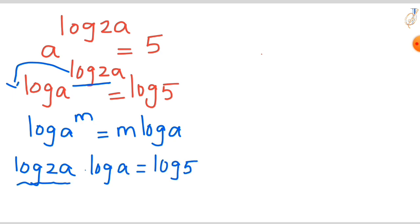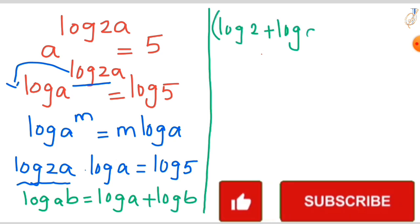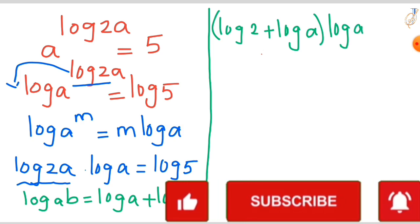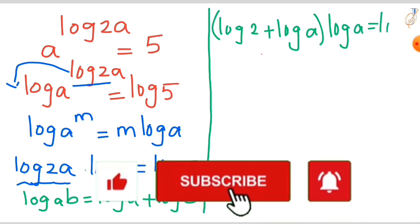In the left-hand side we have log 2a, which is in the form of log(ab). We can write this as log a plus log b. So the left-hand side becomes (log 2 + log a) times log a, that is equal to log 5.